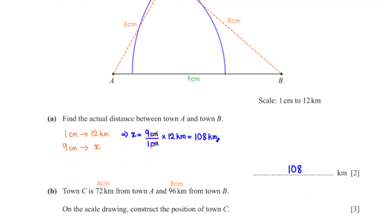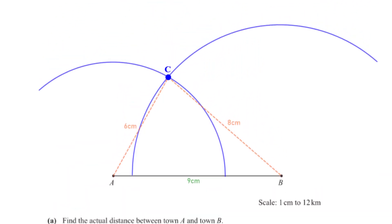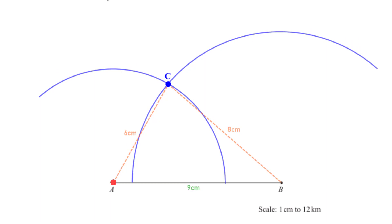Town C is 72 kilometers from town A and 96 kilometers from town B. On the scale drawing, construct the position of town C. Using the scale conversion, 72 kilometers maps to 6 centimeters and 96 kilometers maps to 8 centimeters. First, we measure the width of our compass to be 6 centimeters, stand at point A and construct an arc. Then, measuring the width of the compass to be 8 centimeters, we stand at point B and construct another arc. The intersection point of the arcs is the position of town C.